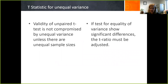The validity of the unpaired t-test is not compromised by unequal variance unless there are unequal sample sizes. So if the test for equality of variance shows significant differences, the t-ratio must be adjusted.